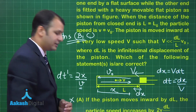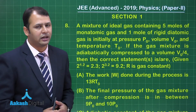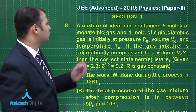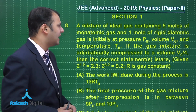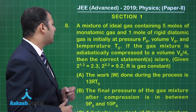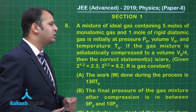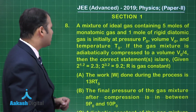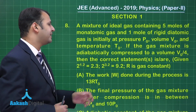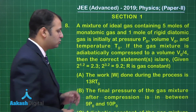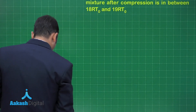Let's move on to question number 8, which belongs to chapter Thermodynamics. As per the question, a mixture of ideal gas containing 5 moles of monoatomic gas and 1 mole of rigid diatomic gas is initially at pressure P₀, volume V₀, and temperature T₀. The gas mixture is adiabatically compressed to volume V₀/4. We need to find which statements are correct.